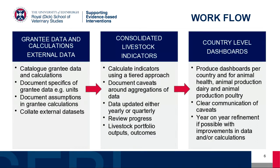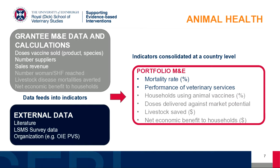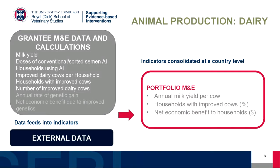For animal health, six indicators have been initially identified for the portfolio. The two in blue — mortality rates and performance of veterinary services — are from external data. The other four will be based on data collected by grantees with calculations. Not all grants might be collecting that information, but it's really trying to understand what grantees are doing and what other data could feed in. For animal production, it's divided between chickens and dairy. For dairy: milk yield per cow, household income, and net economic benefit to household. For poultry: egg production, improved income, and adoption rates.